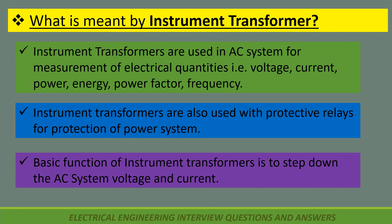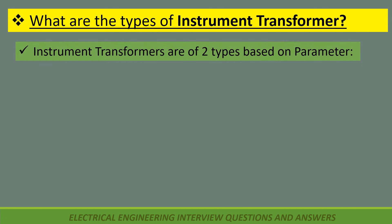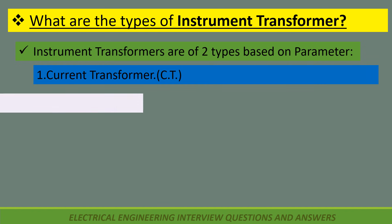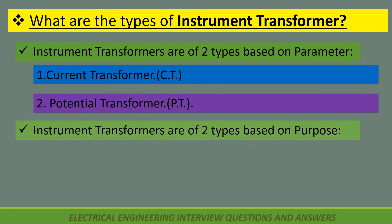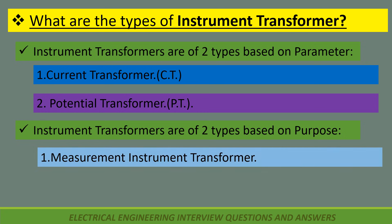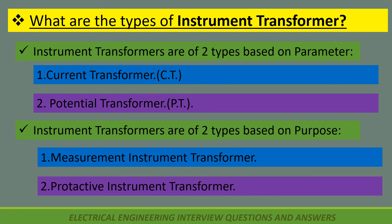The basic function of instrument transformers is to step down the AC system voltage and current. What are the types of instrument transformer? Instrument transformers are of two types based on parameter: first, current transformer; and second, potential transformer. Based on purpose: first, measurement instrument transformer; and second, protective instrument transformer.